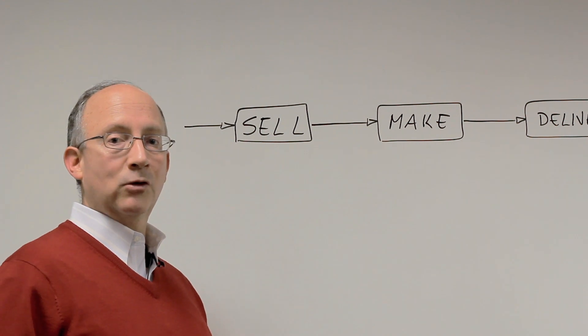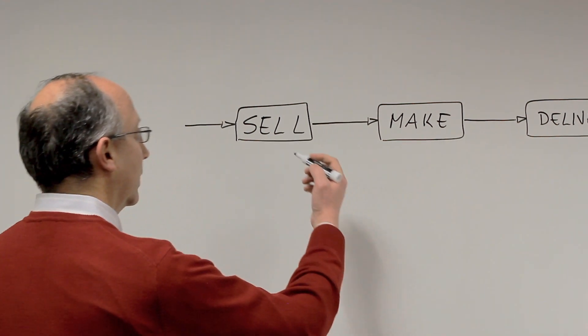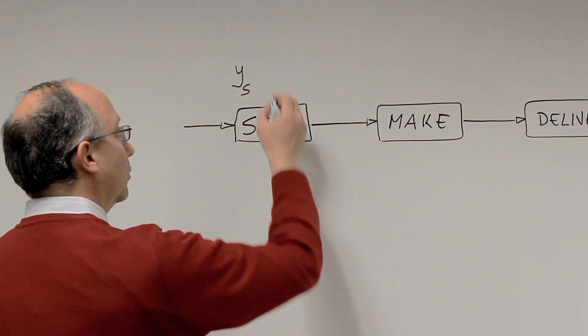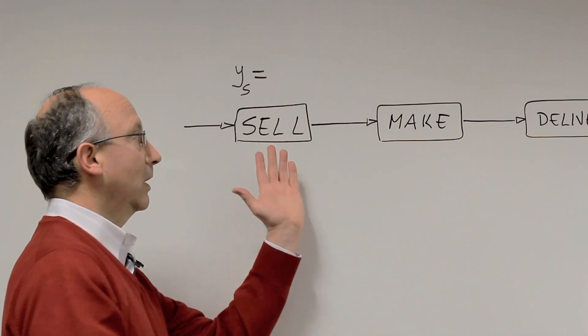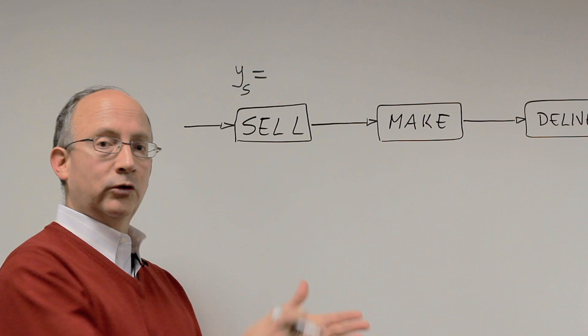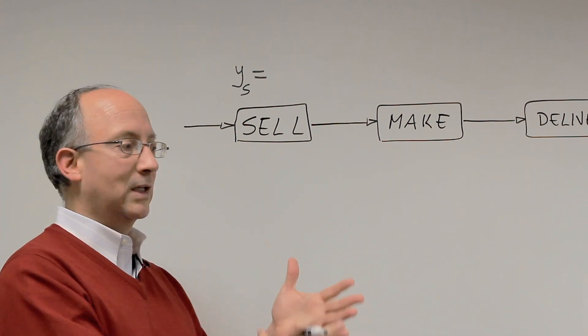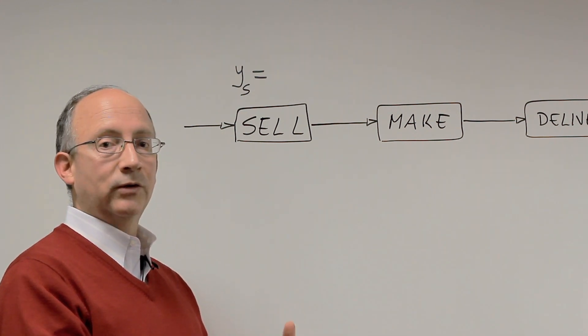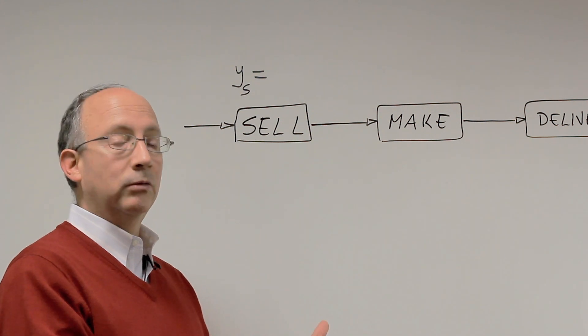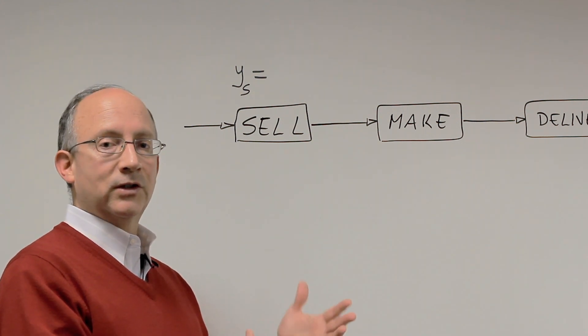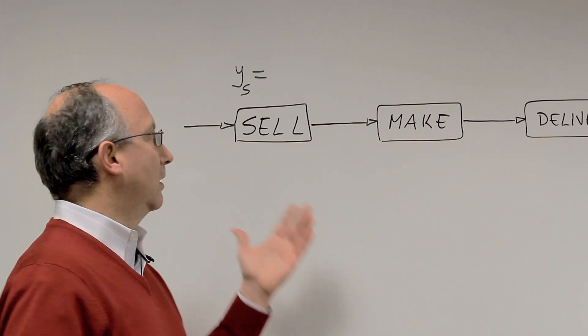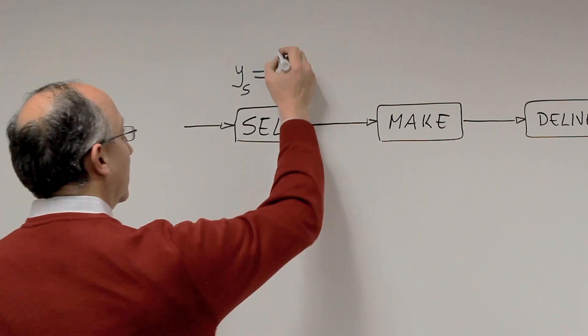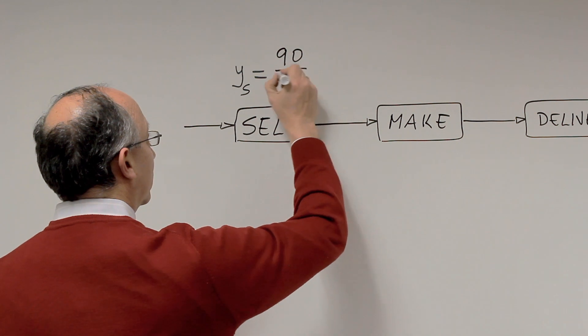That level of performance, I'm going to call it a yield. The yield of the selling function is going to be one in which we need not just a sale, but also a purchase order with all the information correctly entered without any errors - the right customer name and address, the right description of the product to be bought by the customer, etc. All the information has to be perfect. Let's just say that 90 times out of 100, we actually do a perfect job. And so that yield would be equivalent to 90 goods out of 100.